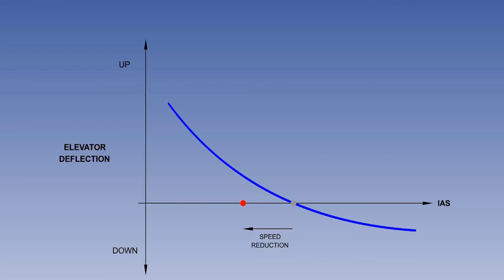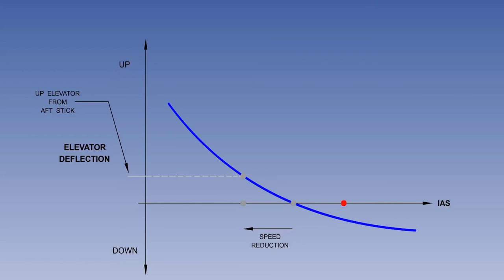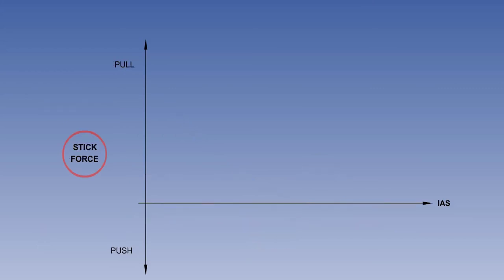While maintaining level flight, as indicated airspeed is reduced, the elevator must be moved up, requiring the pitch control in the cockpit to be moved aft. As indicated airspeed is increased, the elevator must be moved down, requiring the pitch control to be moved forward. In addition to stick position stability, all aircraft must have stick force stability. This means a push force must be required when indicated airspeed is increased, and a pull force must be required when indicated airspeed is decreased.